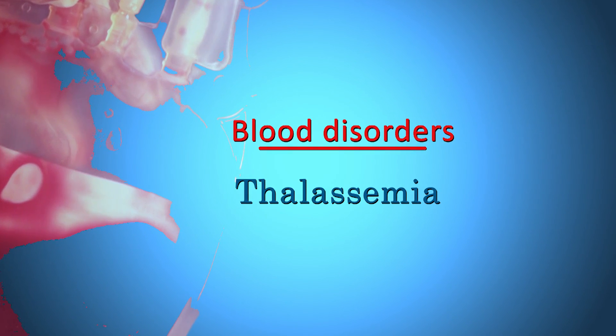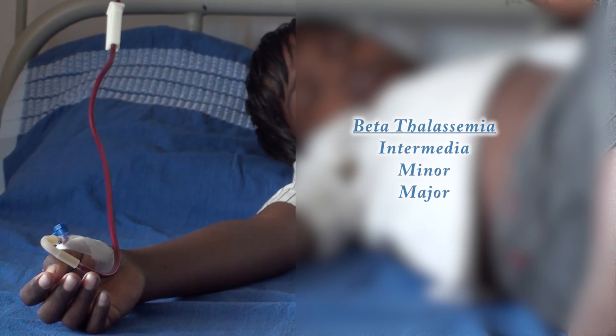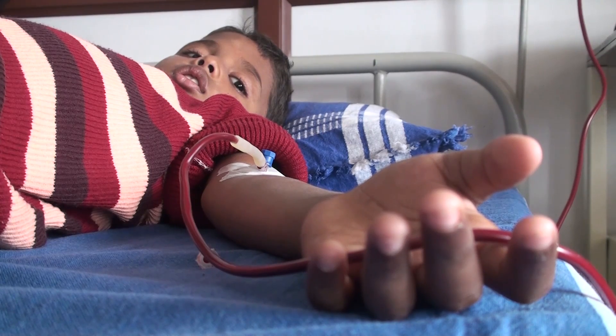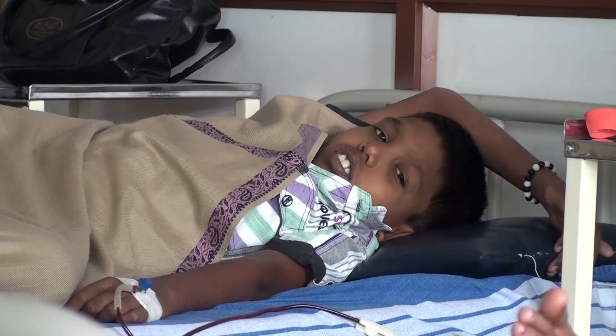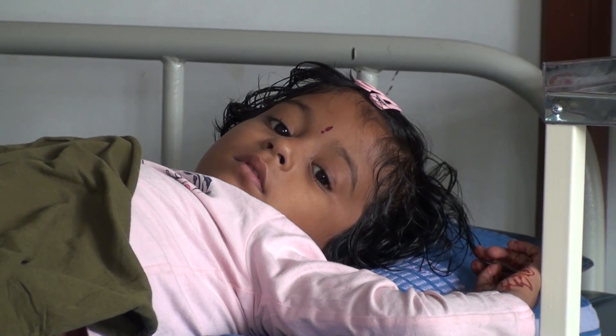Thalassemia is a group of inherited disorders. It can be divided into alpha thalassemia and beta thalassemia. Beta thalassemia can be intermediate, minor, or major. Depending on the symptoms, children are regularly transfused. Thalassemia minor does not require regular transfusions; intermediate also does not require them. But thalassemia major requires chronic regular transfusions to survive. A person with thalassemia who receives regular transfusions faces complications of iron overload, for which chelation therapy is a must. If a child is not getting transfusions, they develop very severe, profound anemia which later leads to death.